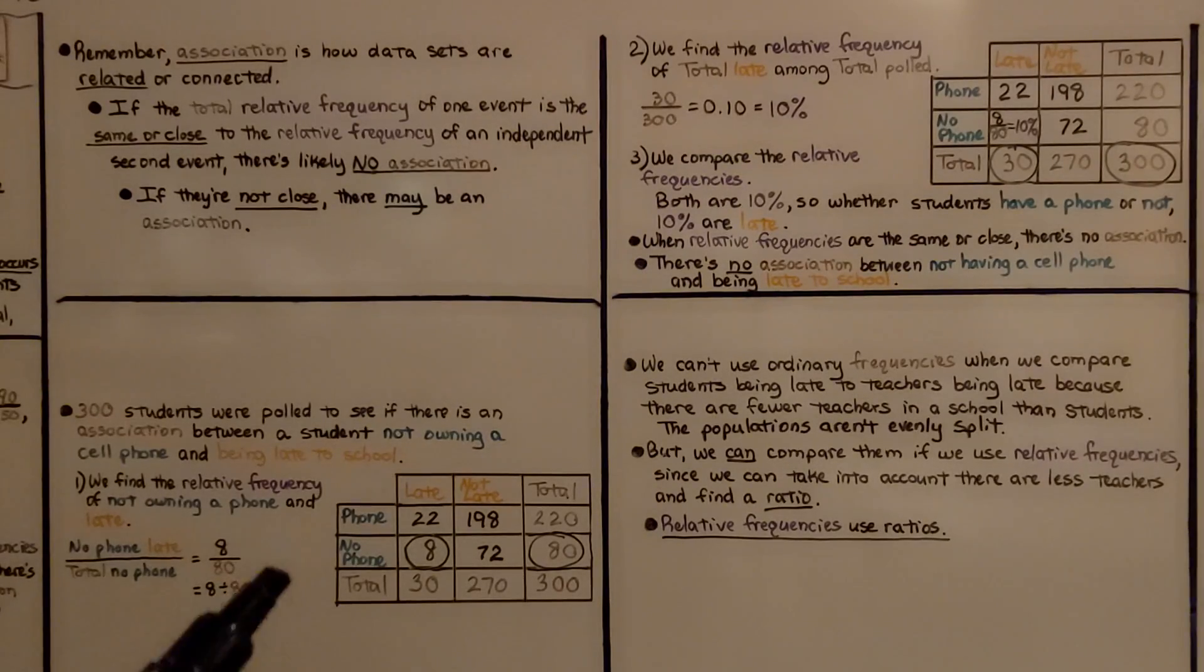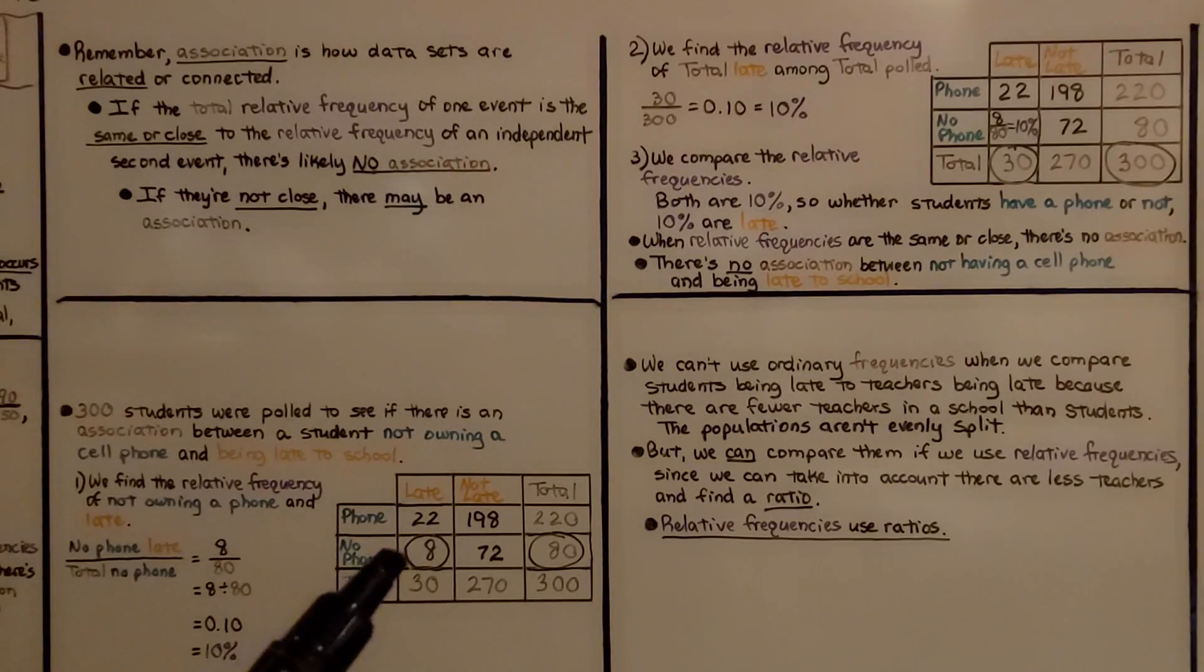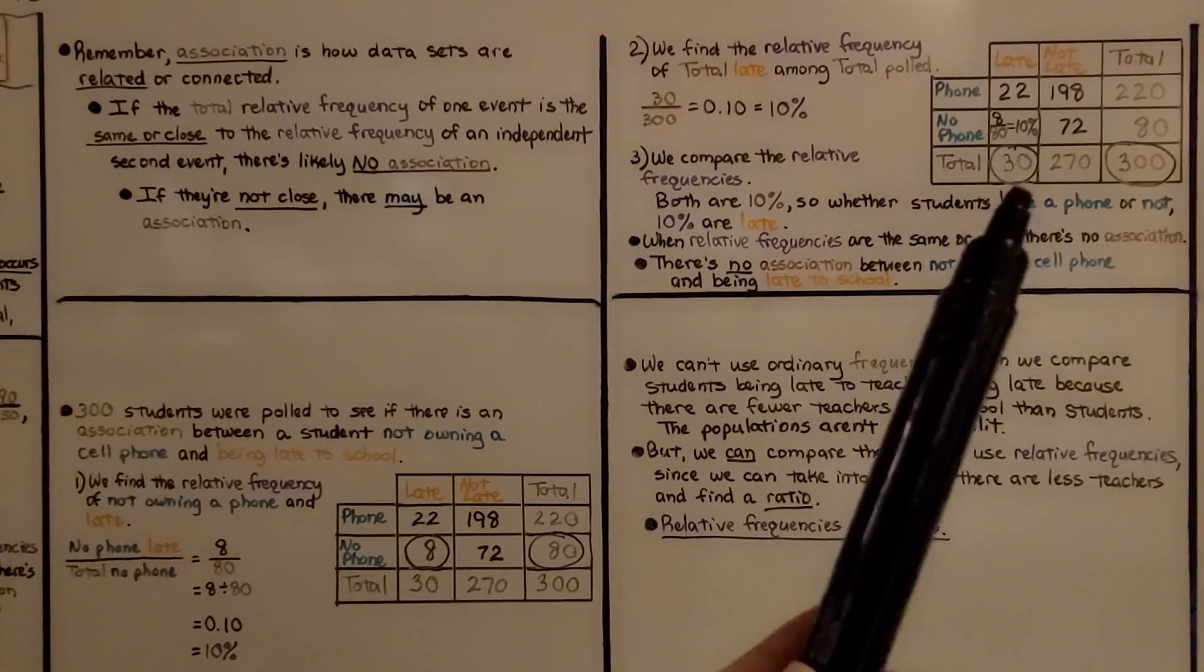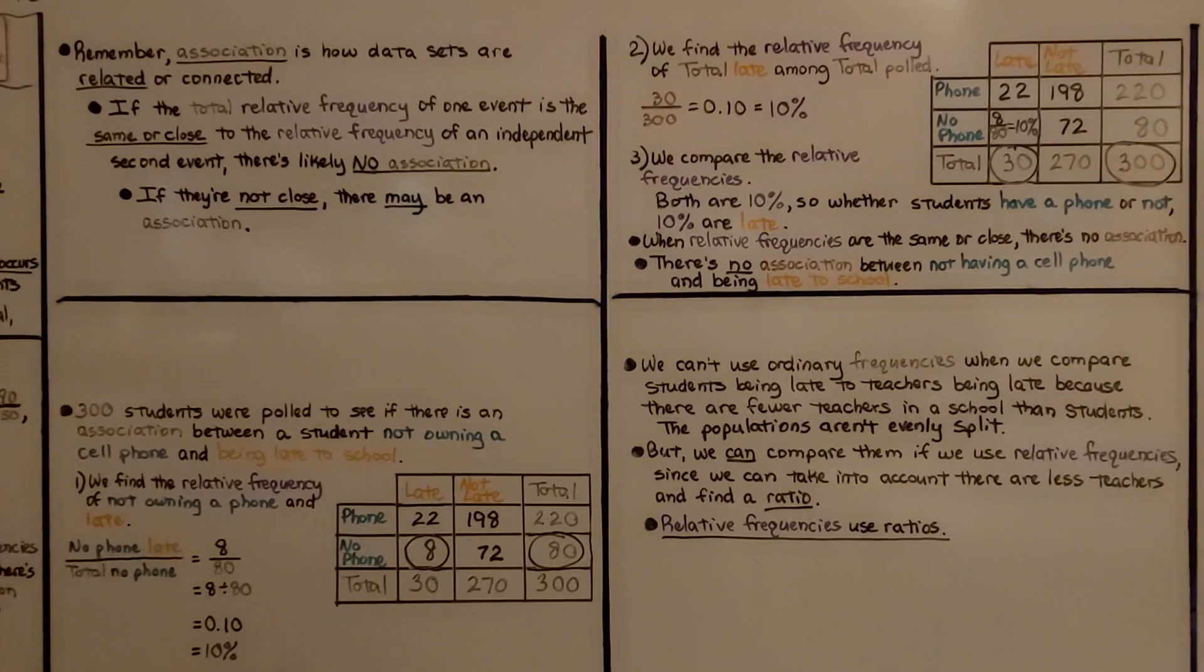Over here, we found the relative frequency for the number of no phones that were late over the total number of phones. We could have done this second. We could have found the relative frequency of the totals first, of the 33 hundredths, then found the relative frequency for the no phone and late over the total. It doesn't matter. We would still be comparing the numbers and we would get our percentages.